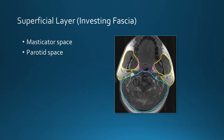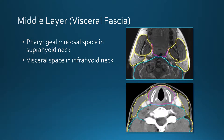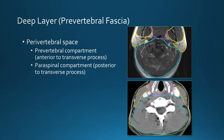The superficial layer, also called the investing fascia, delineates the masticator space and the parotid space. The middle layer, or visceral fascia, delineates the pharyngeal mucosal space in the suprahyoid neck and the visceral space in the infrahyoid neck. The deep layer delineates the perivertebral space, which we can divide into a prevertebral compartment anterior to the transverse process and a paraspinal compartment posterior to the transverse process.